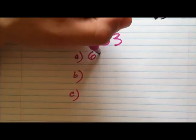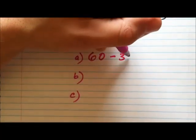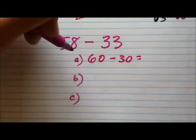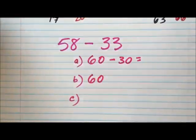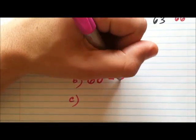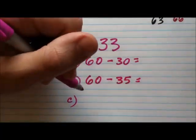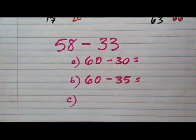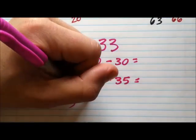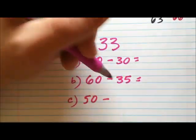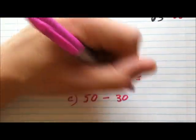So is it going to be A, which would be 60 minus 30. Would it be B, 60 less 35. Or would it be C, which would be 50 minus 30.